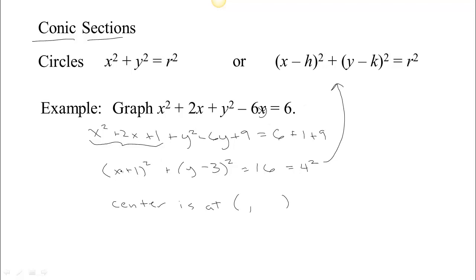If you look at this, we have x plus 1. You can think of that as x minus minus 1, so h must be negative 1. Here, 3 is what's being subtracted from y, so k must be 3. And we can tell that the radius is 4. So we look at this equation, complete the square, and realize we're talking about a circle of radius 4 centered at negative 1, 3.